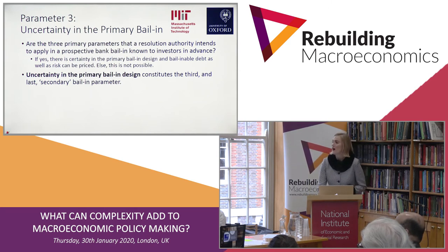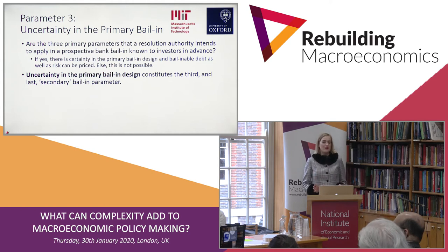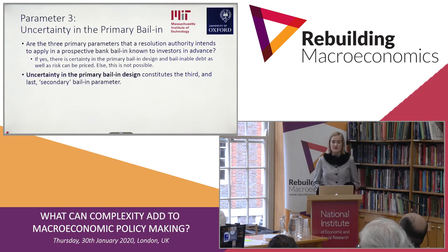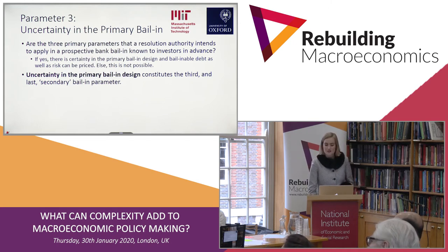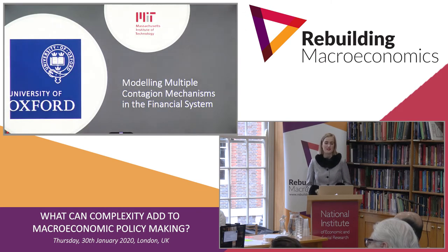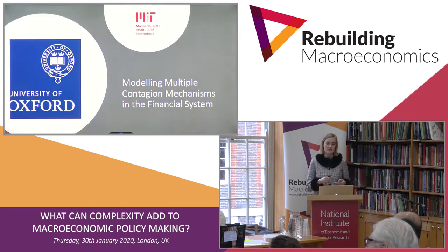I've now explained the key components of the bail-in design. In the results section we will vary these ingredients to see how that impacts systemic risk. But first I'll explain how we model multiple contagion mechanisms in the financial system. We model five prevailing contagion mechanisms in the EU: exposure loss contagion, overlapping portfolio contagion, funding contagion, bail-inable debt revaluations, and non-rollovers of bail-inable debt.